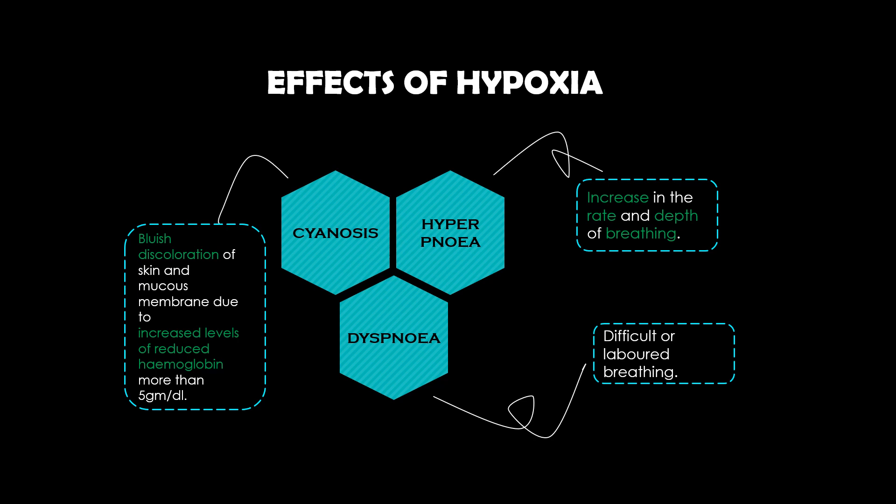Next is dyspnea, which is difficulty in breathing. The last effect is hyperpnea, which is an increase in the rate and depth of breathing. However, the effects depend on the type of tissue. In hypoxic hypoxia, the first organ to be affected is the brain. When the partial pressure of oxygen (PO2) is reduced to less than 20 mmHg, it will cause loss of consciousness within 20 seconds and death within 4 to 5 minutes.